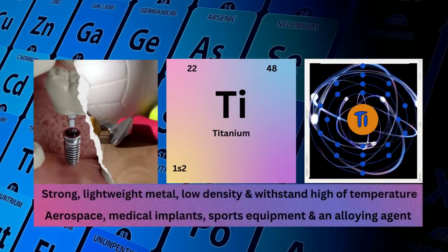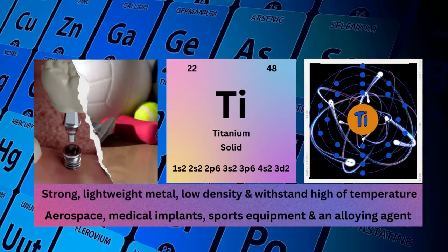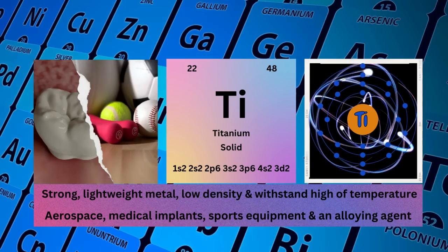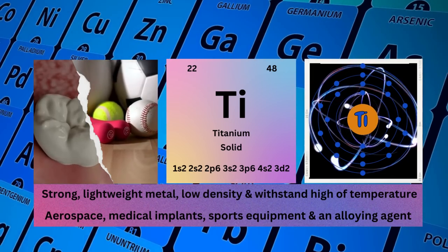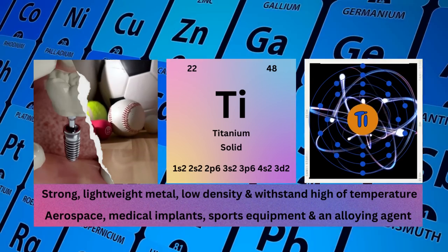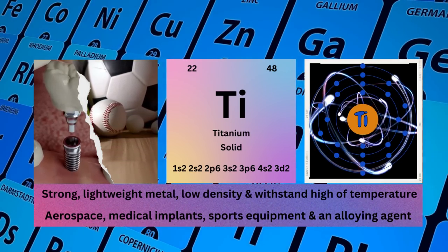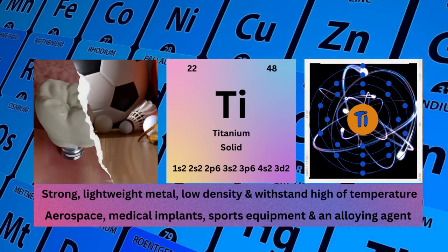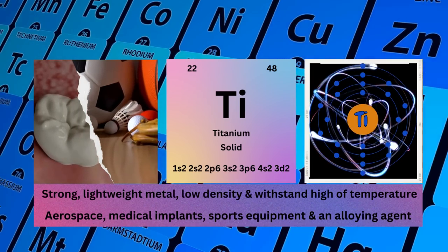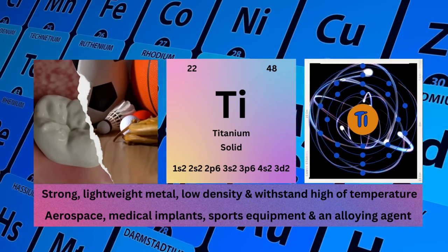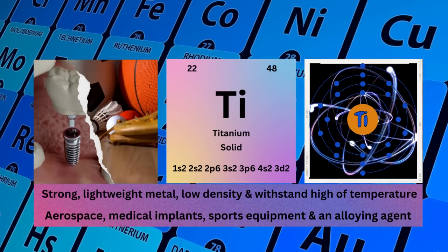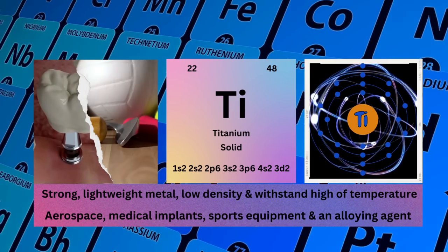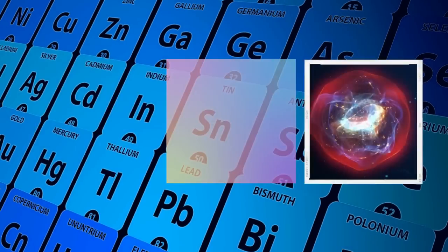Titanium. Atomic No. 22. Mass No. 48. Symbol Ti. State Solid. Electronic Configuration 1S2 2S2 2P6 3S2 3P6 4S2 3D2. Physical Properties: Strong, Lightweight Metal, Low Density and can withstand high temperatures. Titanium is used in aerospace, medical implants, sports equipment, and as an alloying agent.